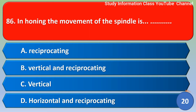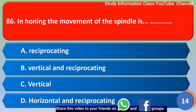Next question: In an awning machine, the movement of the spindle is — option A: reciprocating, option B: vertical and reciprocating, option C: vertical, option D: horizontal and reciprocating. The correct answer is option B, vertical and reciprocating.